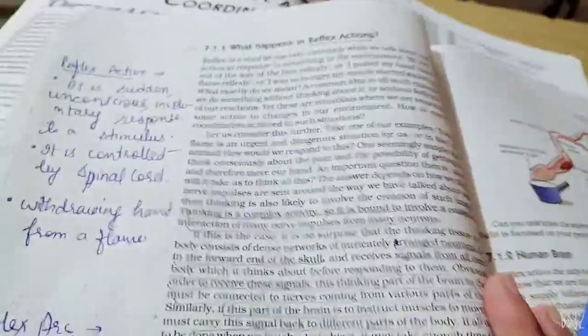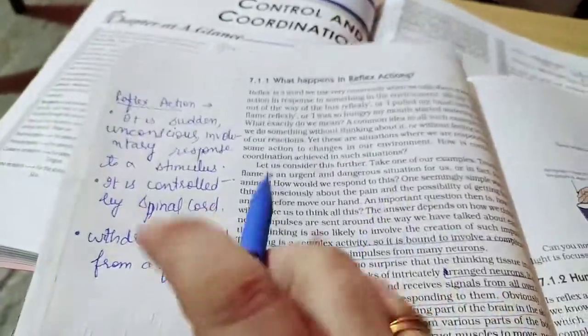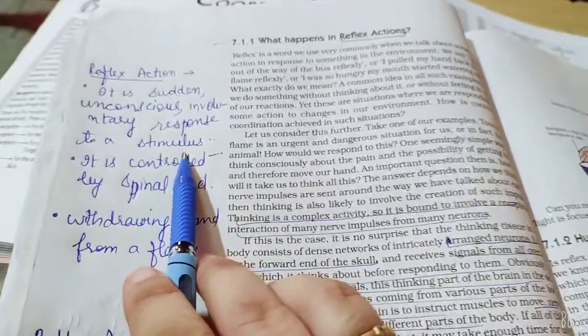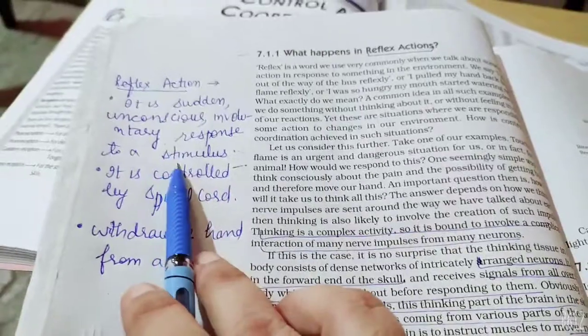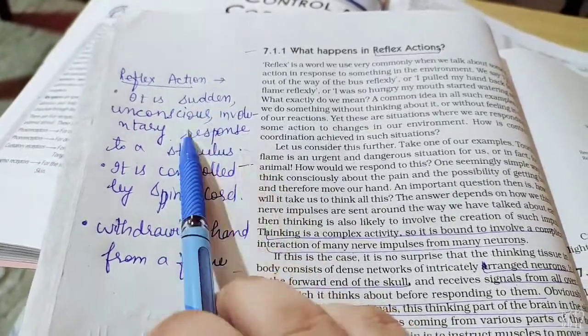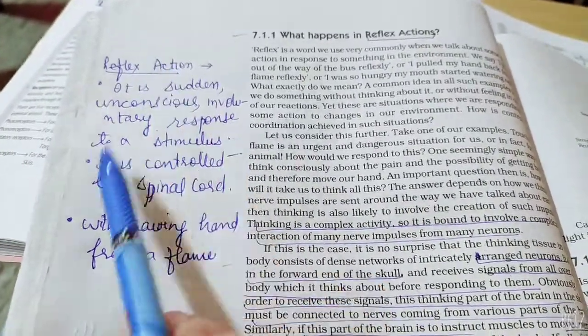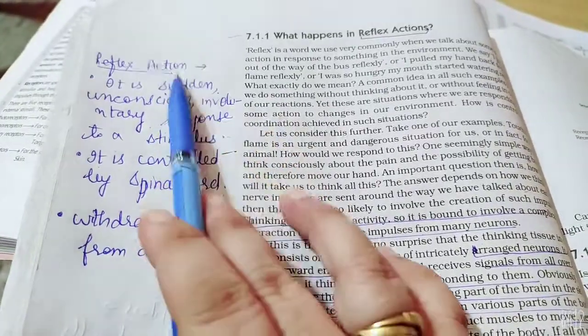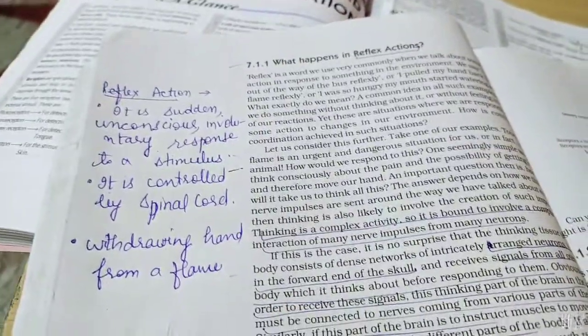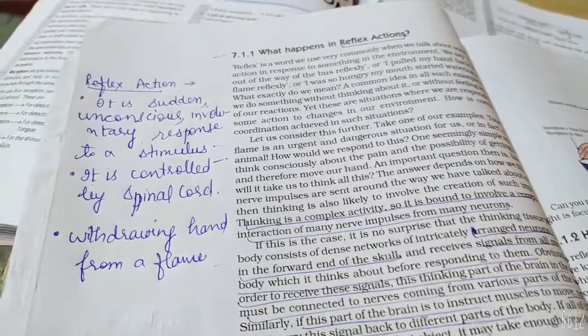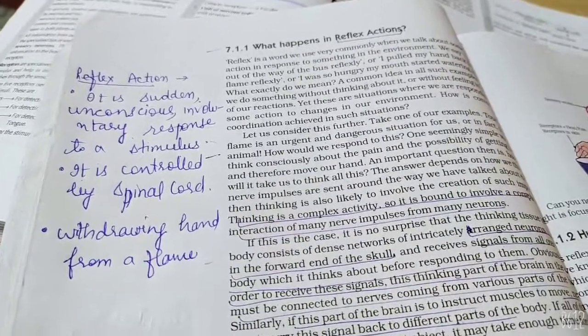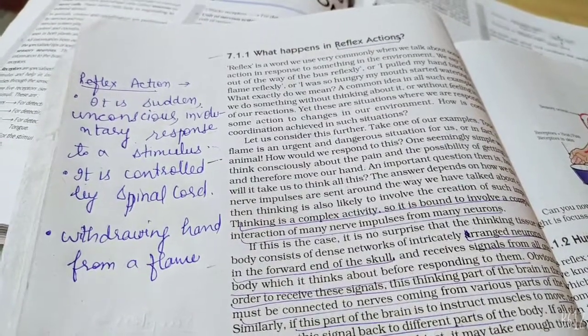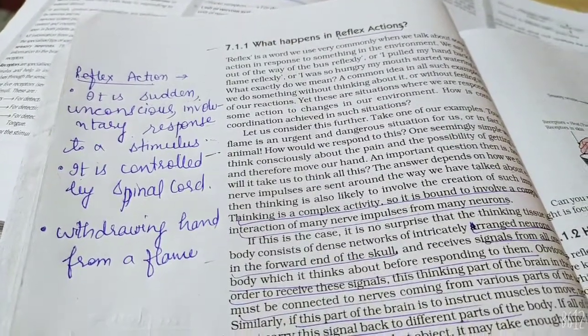Next page. Reflex actions. It is a sudden, unconscious, involuntary response to a stimulus. Stimulus is action. How does it react to it? Reflex actions. Sudden means a sudden response. Now, if I ask you a question, you will first think about it. The brain will process it. You have to feed it. You have to learn it. You will reply to it. But there are some things without thinking. You will reply to it. Reflex actions.